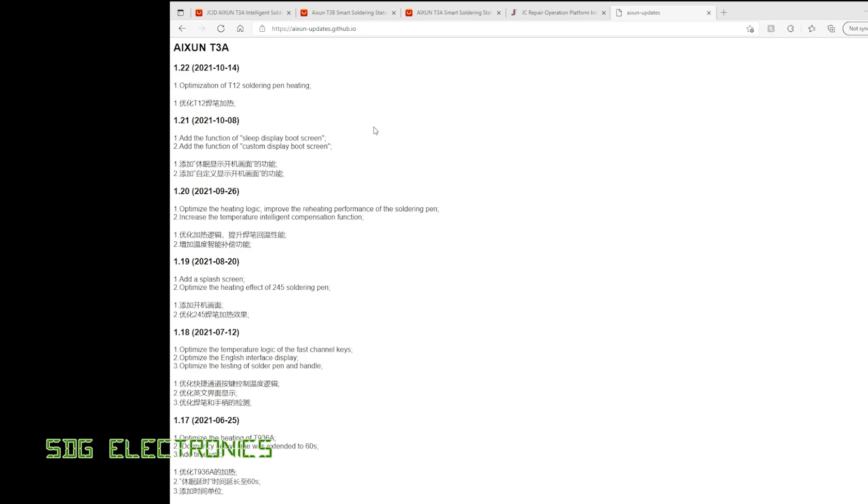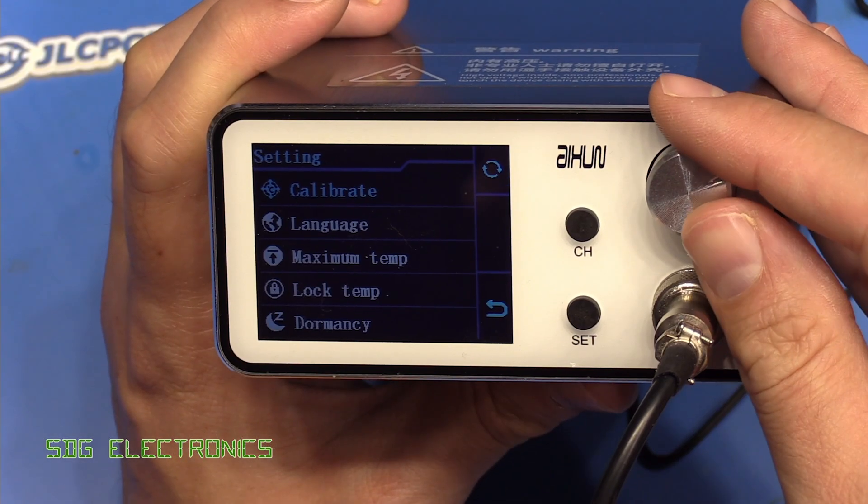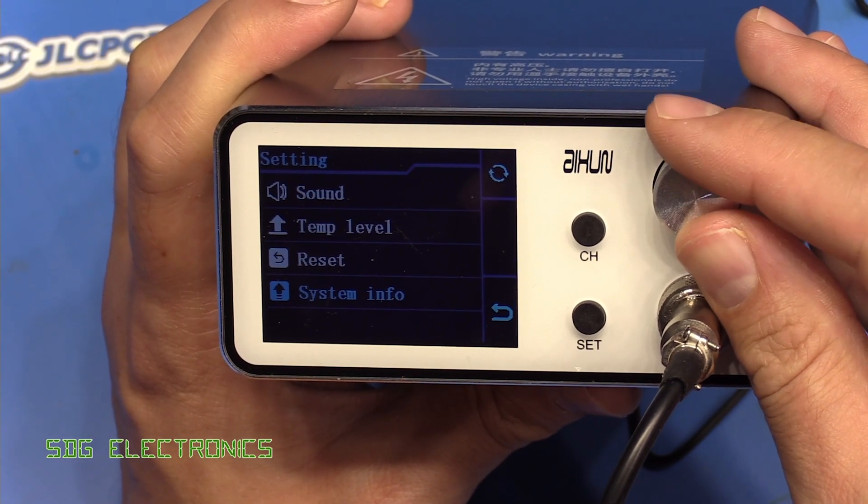For those curious, this is the changelog on accentupdates.github.io. It looks like primarily these updates have been optimizing the control loops for heating. They've got an update here for the 936, one here at 1.19 for the T245, which should impact our soldering line that we're using here. More recently, the T12. And it looks like they've done some GUI updates to change the user interface slightly.